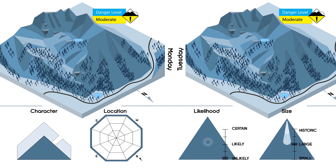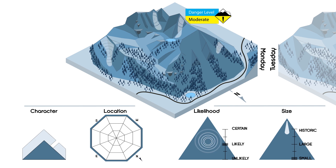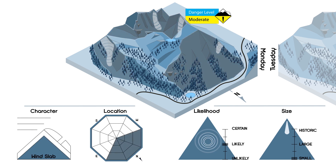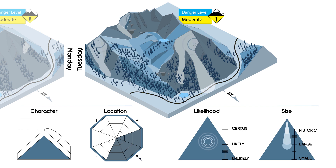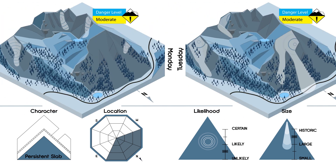Another way to look at it is that your terrain management decisions may vary between days with the same danger level. Here you are on a day with moderate danger with small, easy-to-trigger wind slabs on north-facing slopes. Compare that to another moderate danger day where the avalanches are larger, not so easy to trigger, persistent slabs. In this case, even though the overall danger rating is the same, the avalanches are larger and more unpredictable, and your travel decisions should be influenced accordingly.